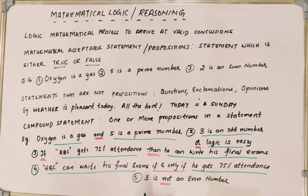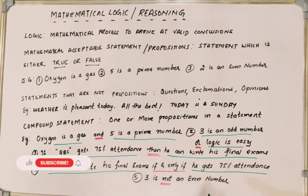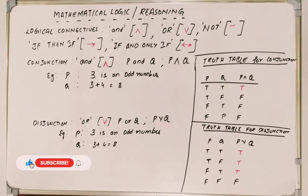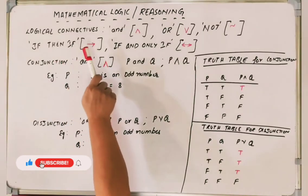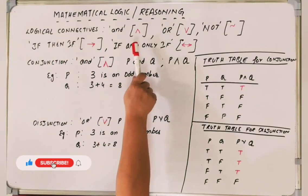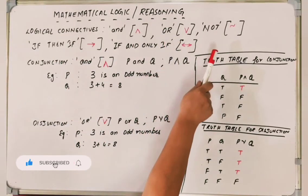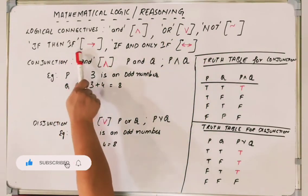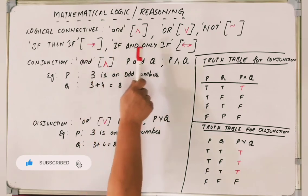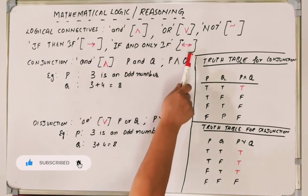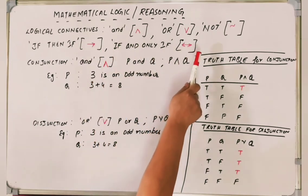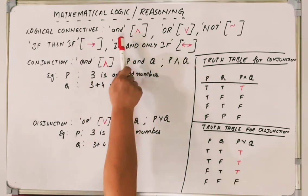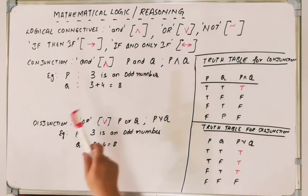All the problems in mathematical logic and reasoning are going to be around these five connectives. The logical connectives and the way they are denoted: IF-THEN is denoted as a right arrow, IF AND ONLY IF is a bi-directional arrow, and we have AND, OR, and NOT.